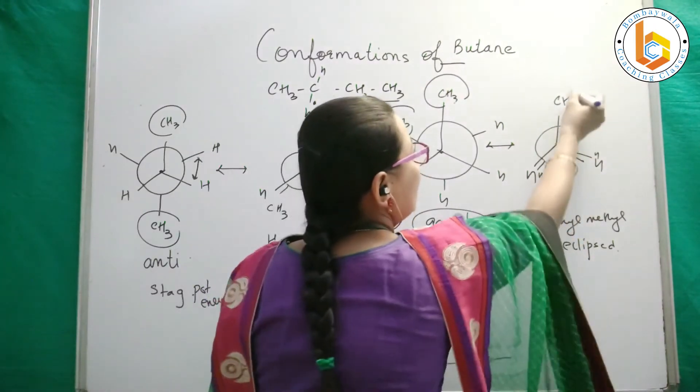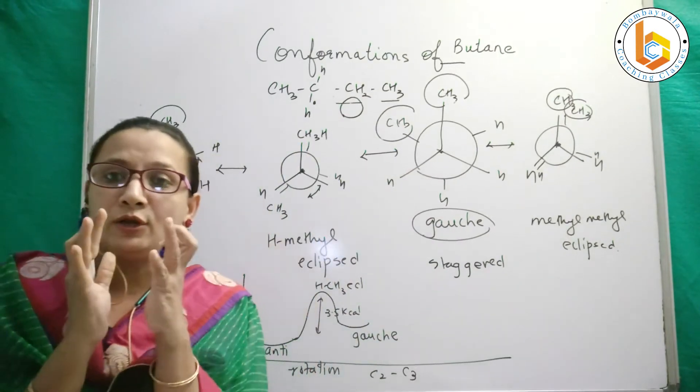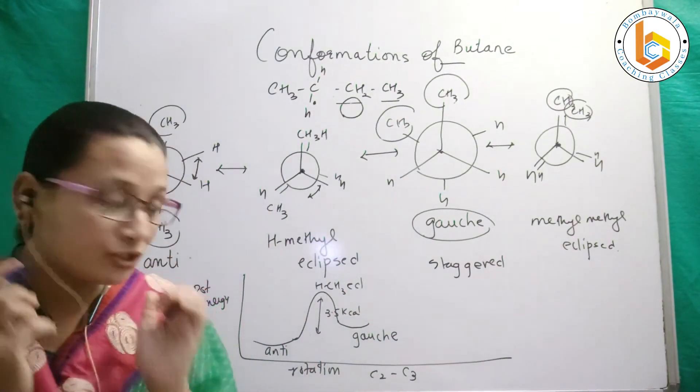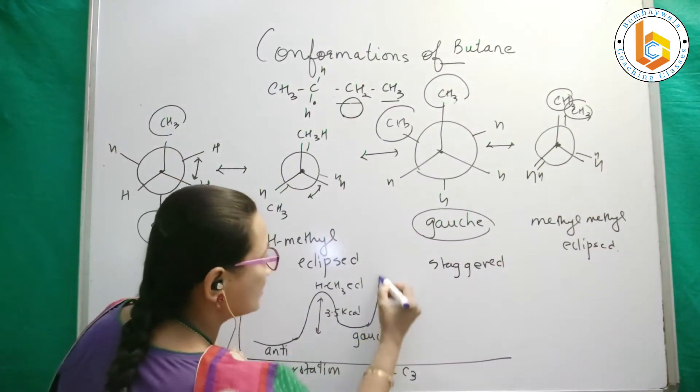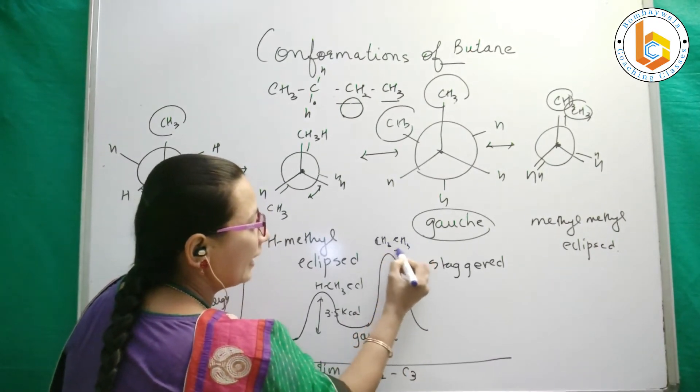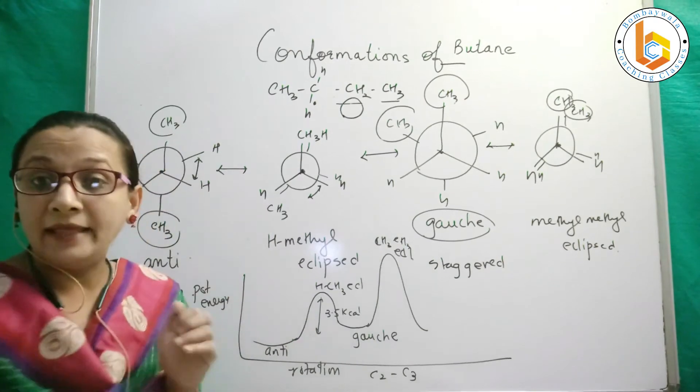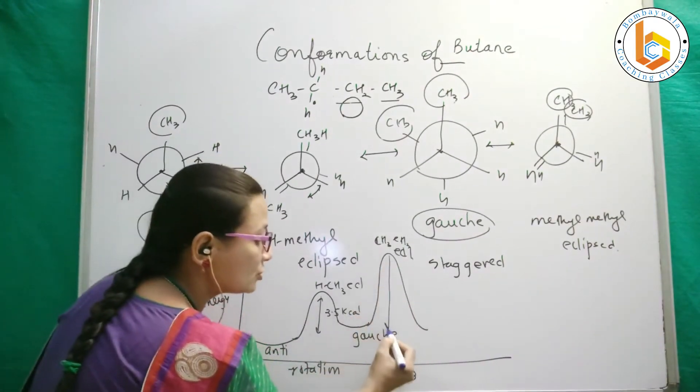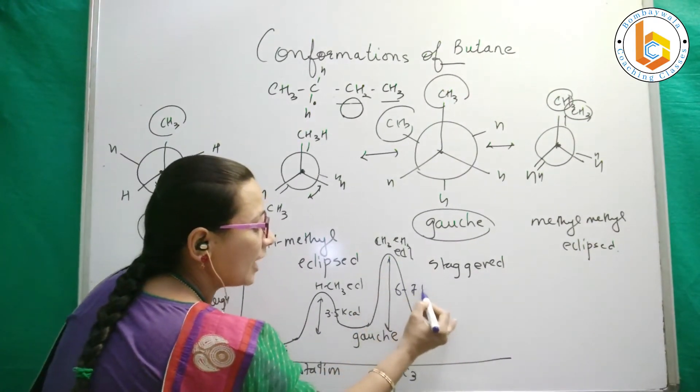Because both the bulky groups are very close and they will show repulsion, it will be like this. This will be methyl methyl eclipsed, and the energy is around 6 to 7 kilocalories.